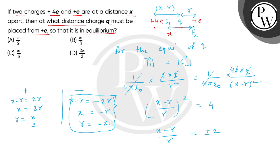So from the +e charge, the distance where we can place q is x by 3. The correct answer is option B. Thank you.